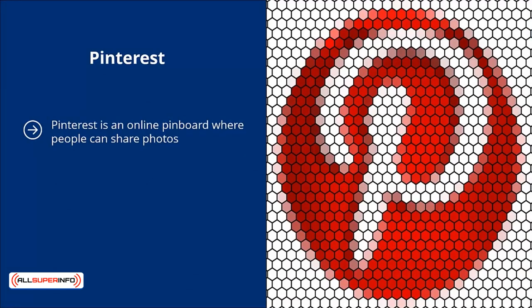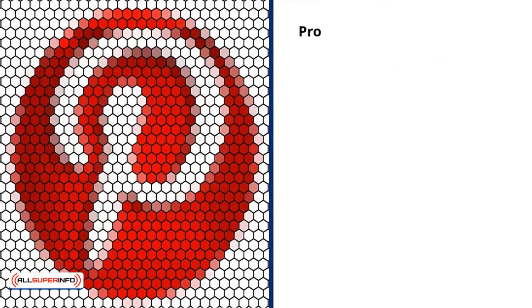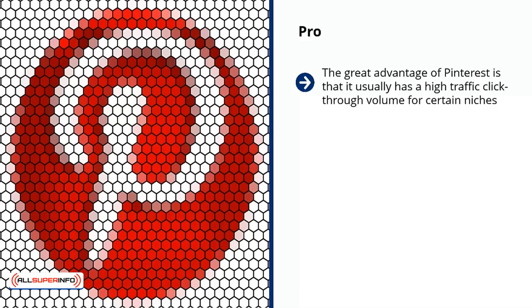Pinterest: Pinterest is an online pin board where people share photos that are linked to web pages. Pinterest is heavily categorized, so you can categorize your pictures to target specific niches. The great thing about Pinterest is that you can put your affiliate link directly on a photo, though using a redirect to track traffic is recommended. Pro: Pinterest usually has a high traffic click-through volume for certain niches — specifically, graphics-friendly ones.